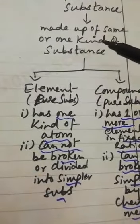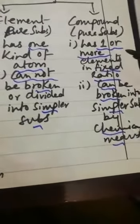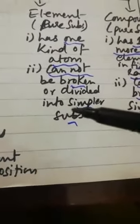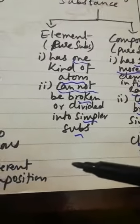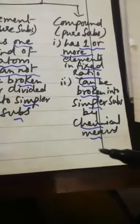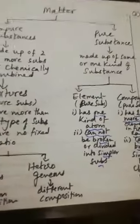Pure substances are those made up of the same or one kind of substance, further classified into elements and compounds. An element is a pure substance with one kind of atom that cannot be broken into simpler substances. Compounds are pure substances with one or more elements combined in a fixed ratio, and they can be broken into simpler substances by chemical reactions or chemical means.